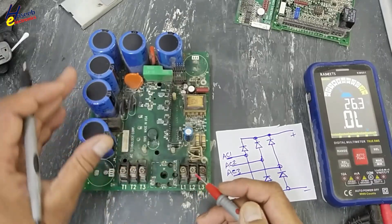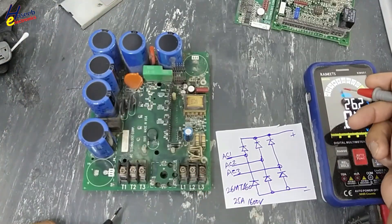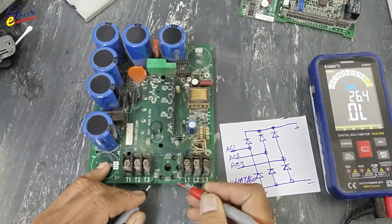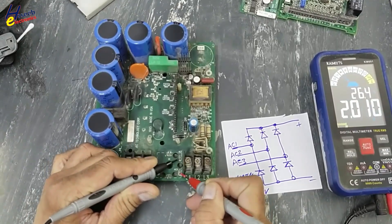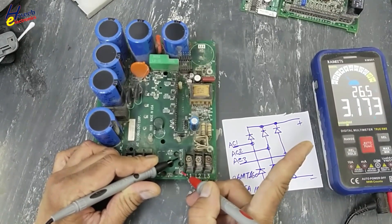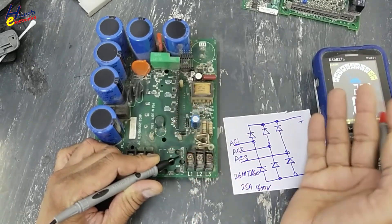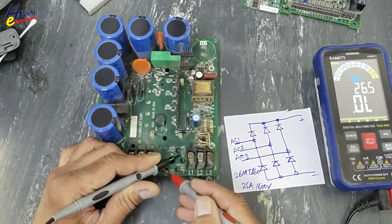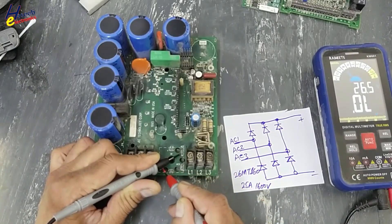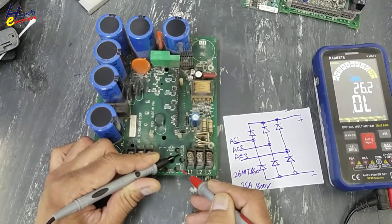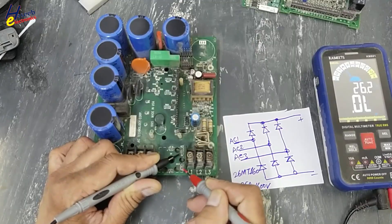Set multimeter to diode mode. Connect to AC1 terminal and AC3. Meter is showing some reading and then it is open circuit. AC1 and AC2, open circuit. Return back to AC3, now open circuit.